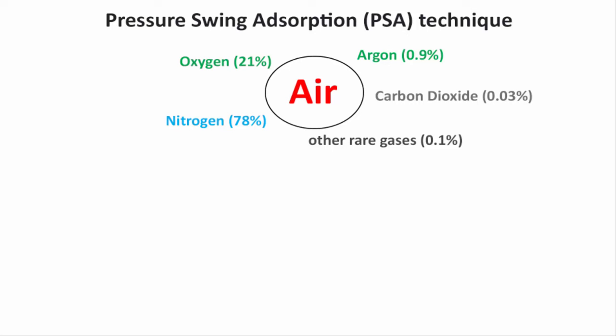Ambient air — the air around us — contains 21% oxygen, 78% nitrogen, 0.9% argon, and 0.1% rare gases.